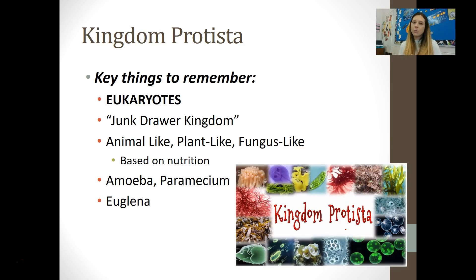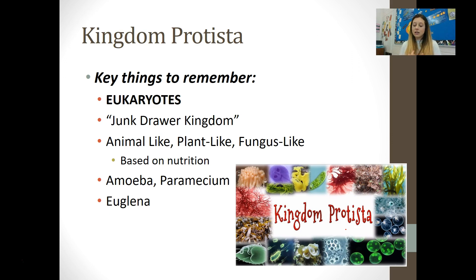Key things to remember about kingdom Protista: they are all eukaryotes. We call it the junk drawer kingdom because there's a little bit of everything. They are classified as animal-like, plant-like, or fungus-like based on the way they obtain their nutrition. The protists you are responsible for knowing are the amoeba and paramecium, which are animal-like protists, and the euglena, which is a plant-like protist.